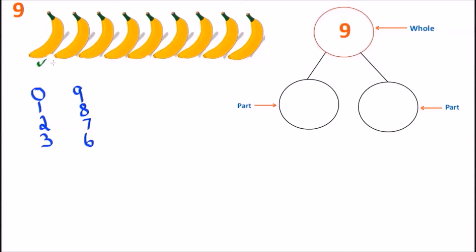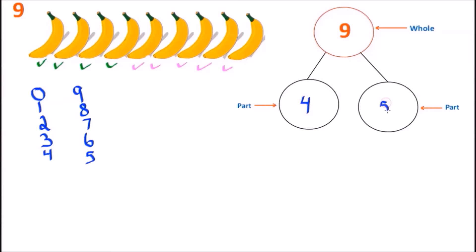Continuing to count: one, two, three, four — we have four bananas, so put down the number four. How many bananas remain? One, two, three, four, and five — we have five. The next number bond is a four and a five: four on the left side, five on the right, and together they give us the number nine. So far we have five different number bonds.